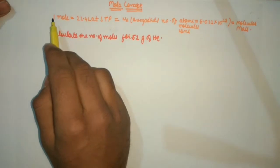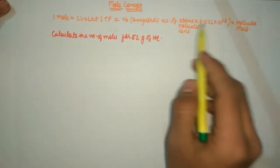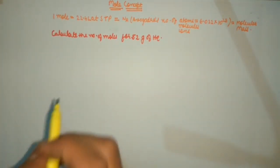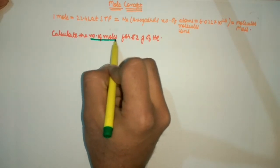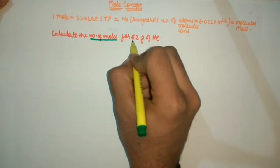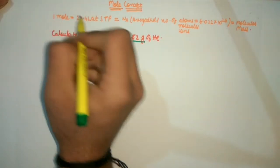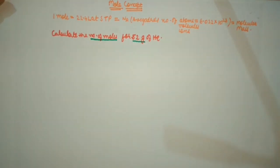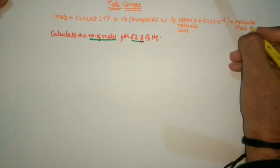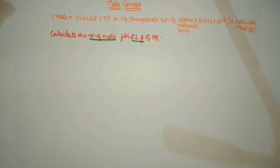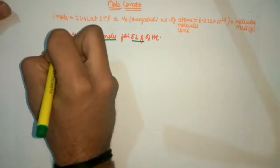As I said, whenever we start any question, we first use this equation. In this question we are given number of moles and 52 grams, meaning here we connect number of moles, one mole, and grams. Molecular mass is in grams, so this shows that I will make a relation between these two. So in the answer I will start writing.